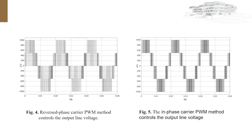Figure 4 is the line voltage UAB waveform output by reversed-phase carrier PWM control.